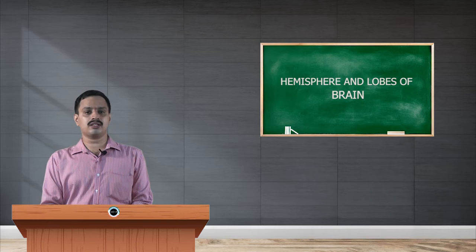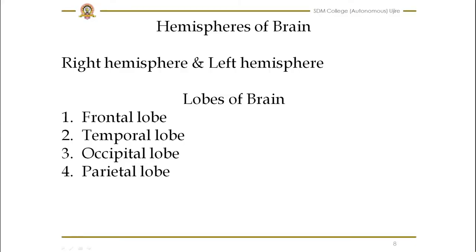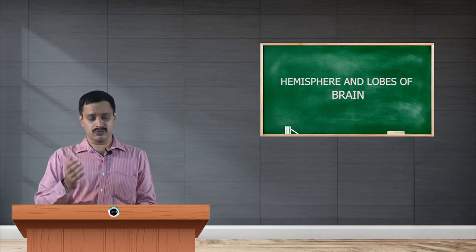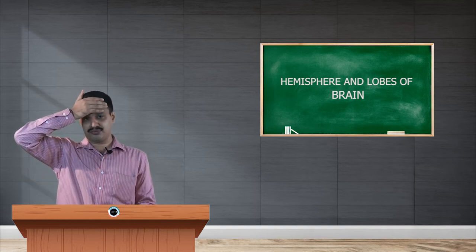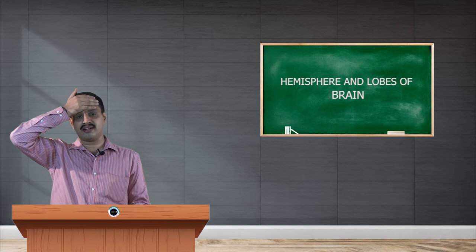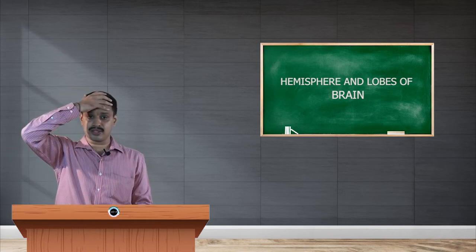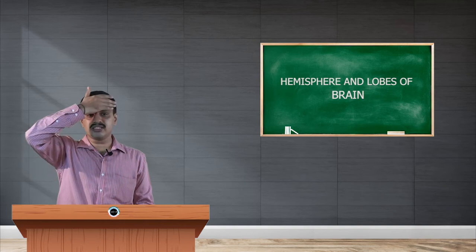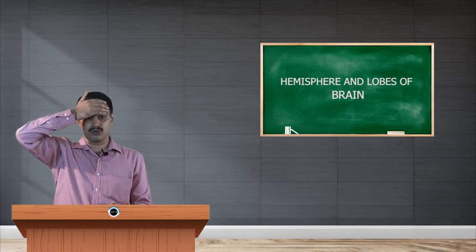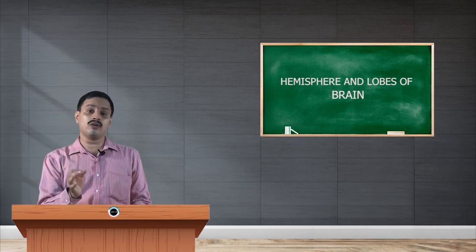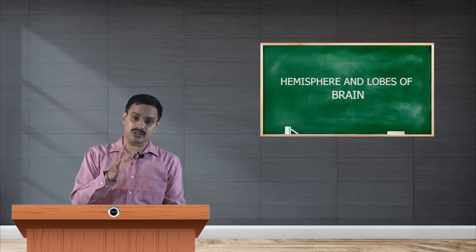As I said to you earlier, the first one is frontal lobe. Let us see what is frontal lobe and what is the function of frontal lobe. The frontal lobe comes at the front side of the brain region or head region. This part is the frontal lobe region and this is the prefrontal lobe.